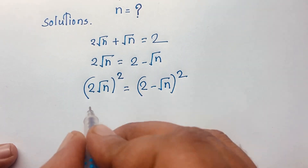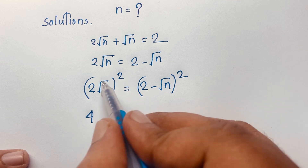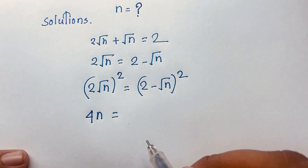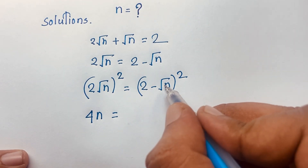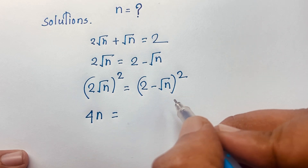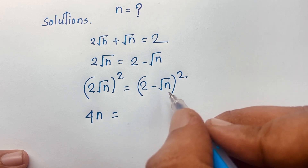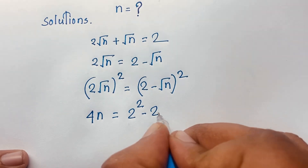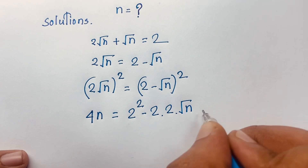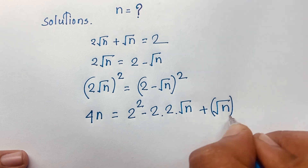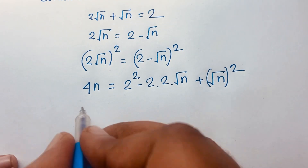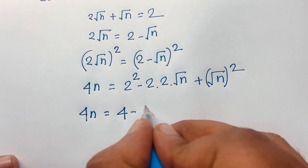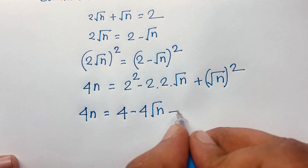On the left side, (2√n)² = 4n. On the right side, we expand (2 - √n)² using the formula (a - b)² = a² - 2ab + b², giving us 2² - 2·2·√n + (√n)², which is 4 - 4√n + n.